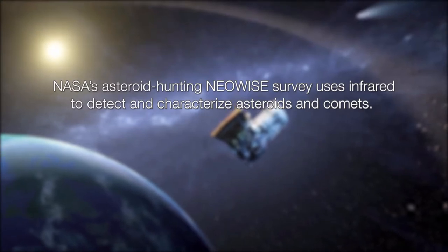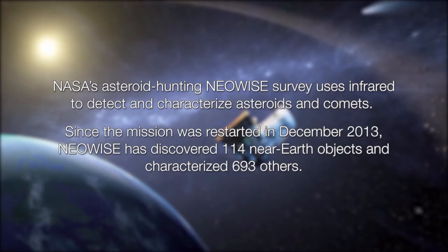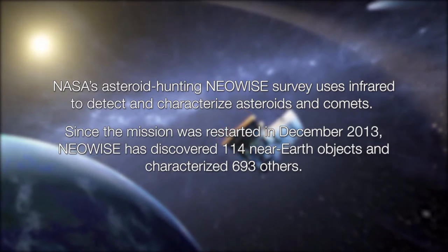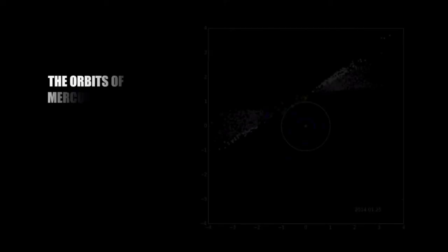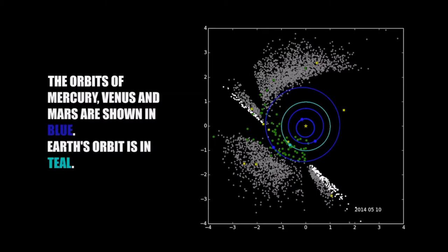A surprise asteroid which NASA only spotted on Christmas Day has skimmed past the Earth. The asteroid, named 2017 YZ4, came its nearest to Earth at 3:56 PM GMT on Thursday, missing us by a mere 140,000 miles.